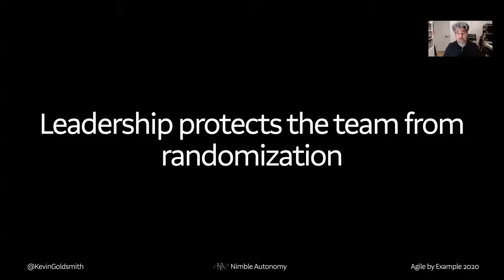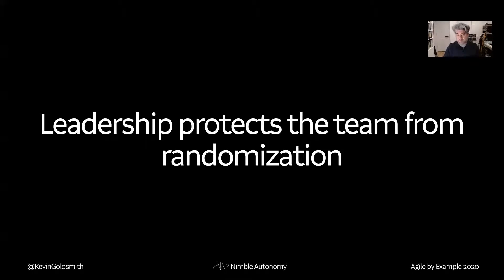All these things in place — the team taking accountability, the team taking responsibility — and that the team has earned trust means that now leadership can protect the team from being randomized by work coming in from outside the team. If these things are in place, the team is making progress towards its goals aligned to the mission, to the vision, to the values — then leadership can actually be in a place where it's just protecting the team because the team is doing good work. Interference with it is only going to make the team less efficient.